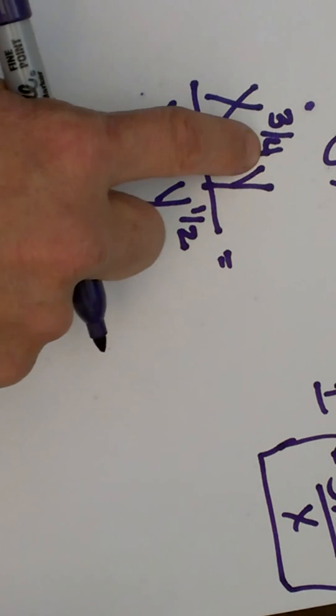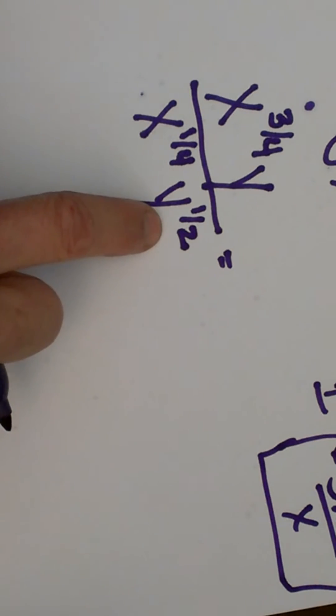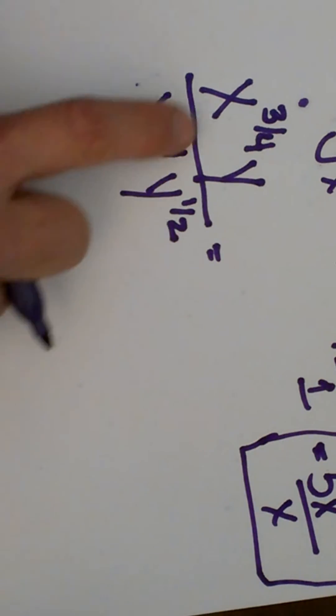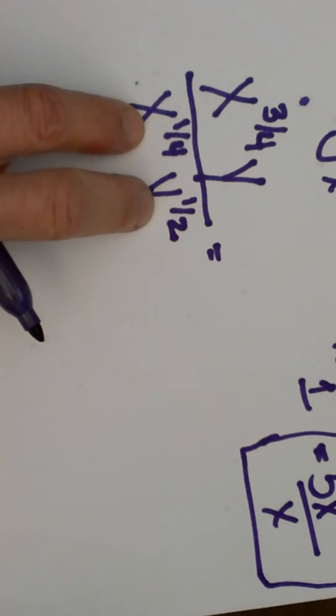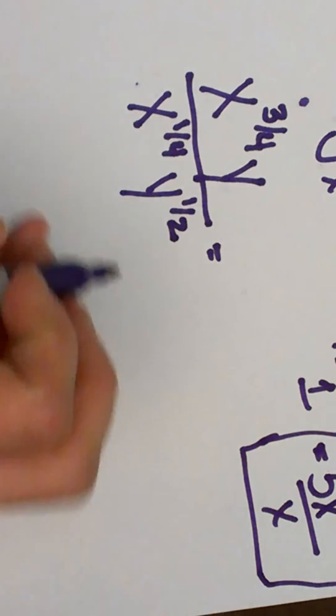We have x to the 3/4 y over x to the 1/4 y to the 1/2. So this time we have two variables, again we are going to use the same rule, we are going to take the exponents and subtract them.